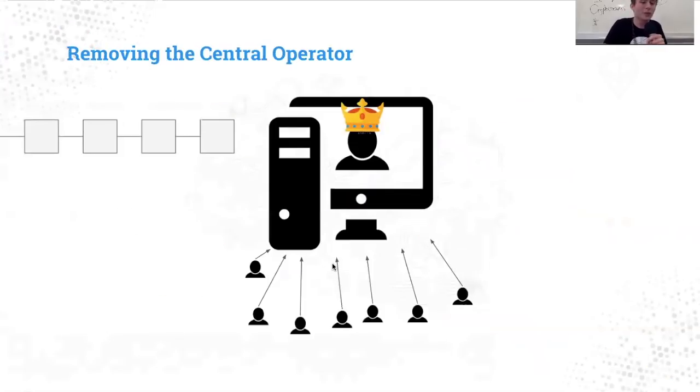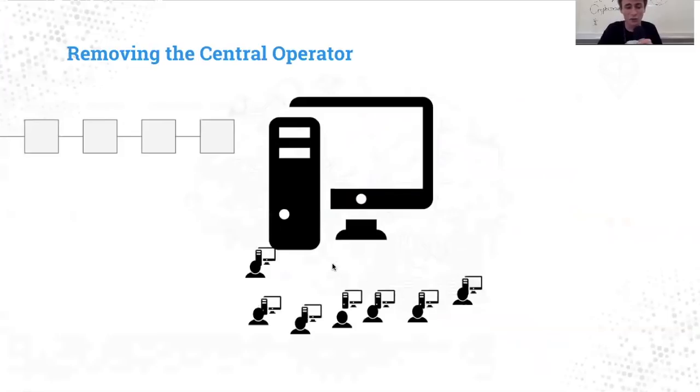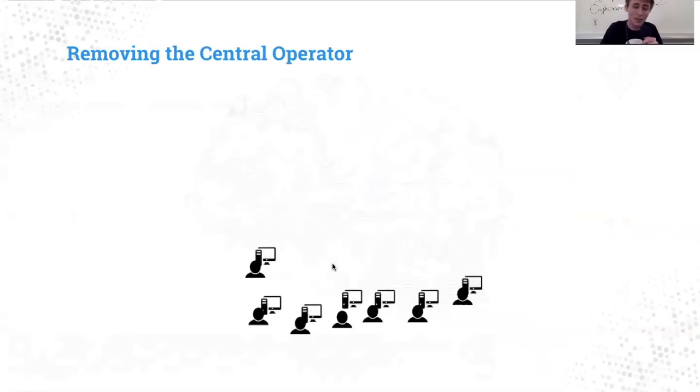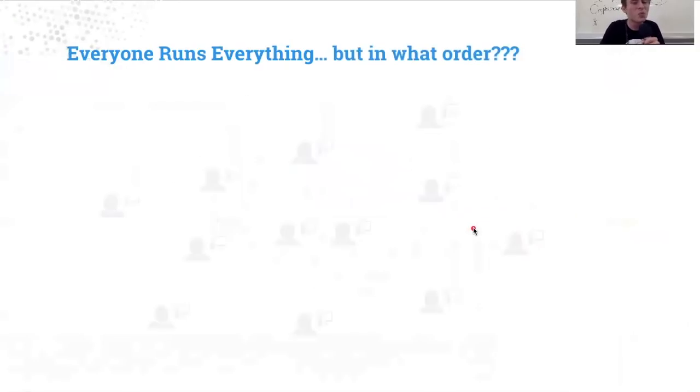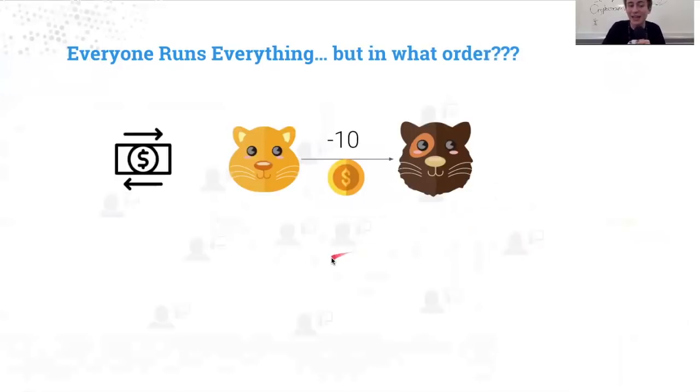We can do better. One way we can naively do better is by removing the central operator, demoting their king status and just getting everyone to run the code that we had written for PayPal. That seems kind of reasonable. You start to get this system which looks a little bit like Bitcoin or Ethereum already. Everyone's running the system and sending transactions back and forth. The question is, which order do we send those transactions? And that is actually a big deal.